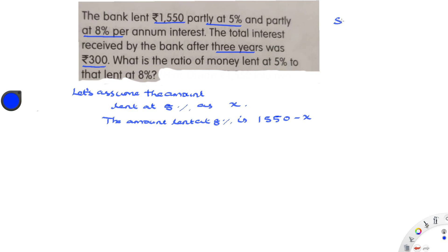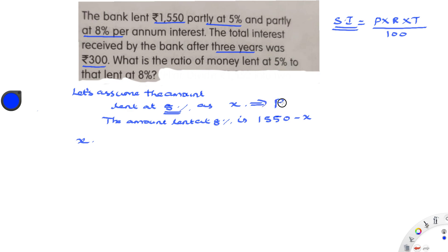We know the simple interest formula: Simple Interest = P × R × T / 100. Here we have two interest rates, so we need to substitute two interest rates — one at 5% and another at 8%. For the 5% rate, the principal is x. So the interest for that portion is x × 5 × 3 / 100.